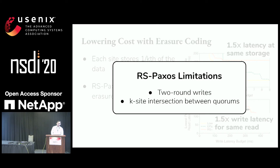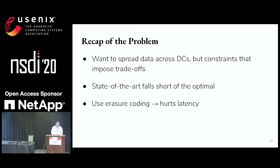There's also a second limitation: between quorums, RSPaxos has unnecessarily large intersections, which prevents it from closing in on the lower bound. In summary, we want to spread data across data centers to improve availability and latency, but constraints impose trade-offs in three dimensions: read latency, write latency, and storage.